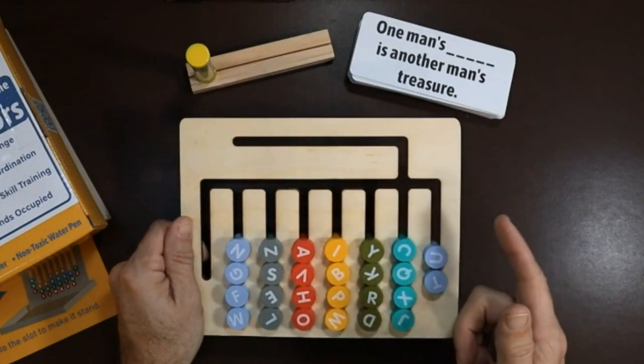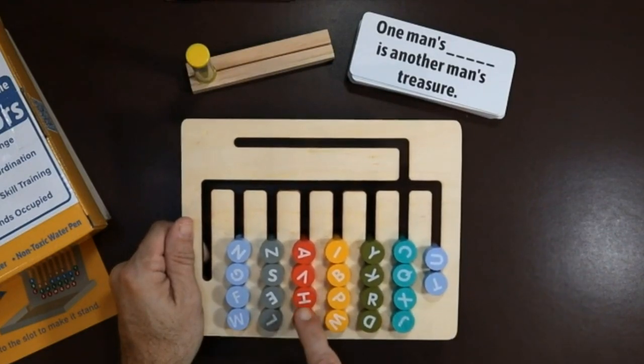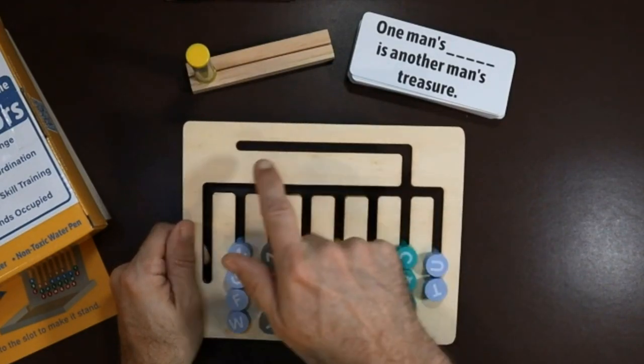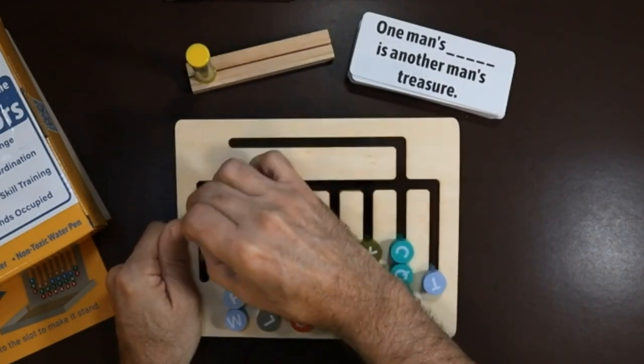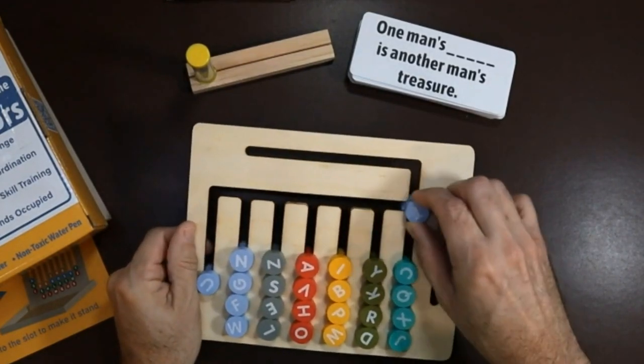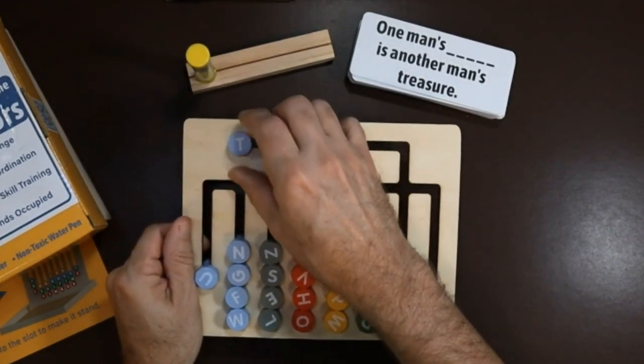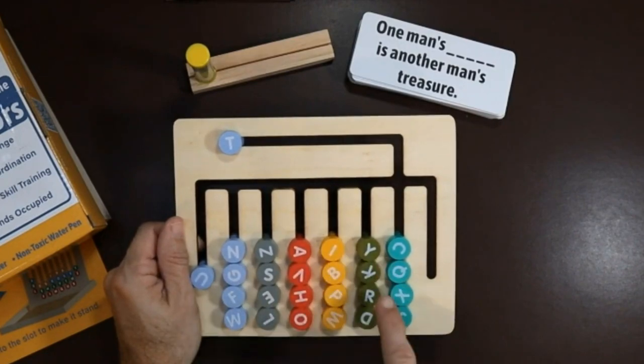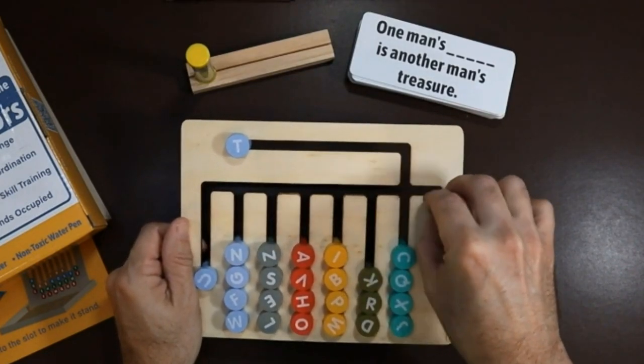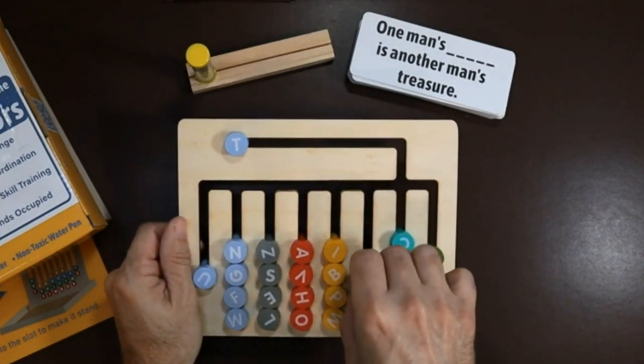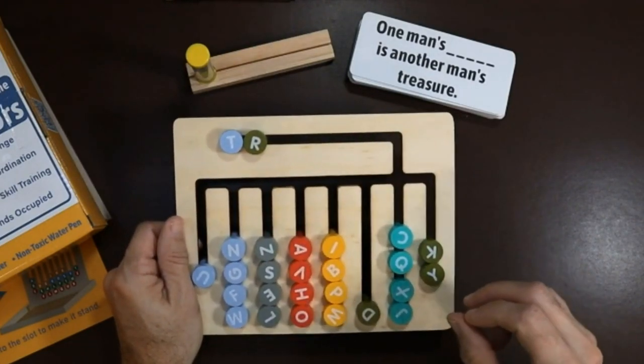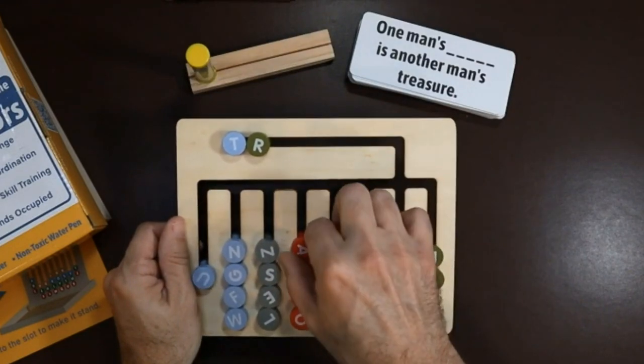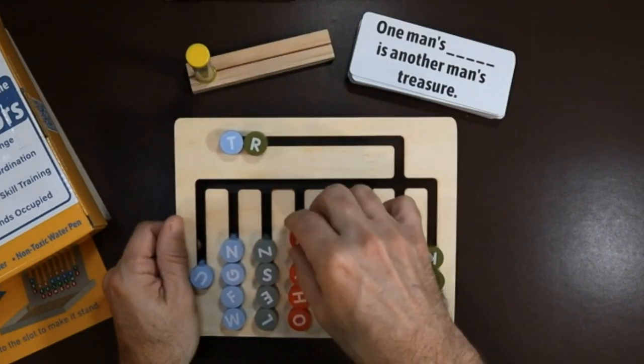So then once you've gotten that correct, you've got to then find those letters down here to spell the word. So for trash, we'll have to move this over here out of the way, and then we can move our T up here. So next we've got to find our R. Our R is right here. So the person playing the game, in addition to getting just basic cognitive exercise, is also getting physical exercise and working their fine motor skills because of the way they're moving around the puzzle pieces.